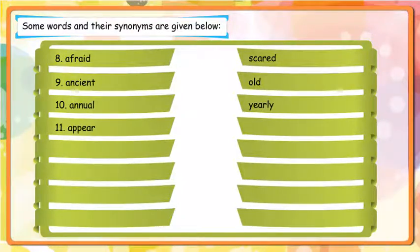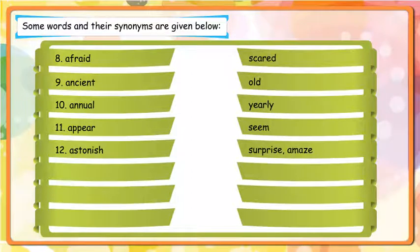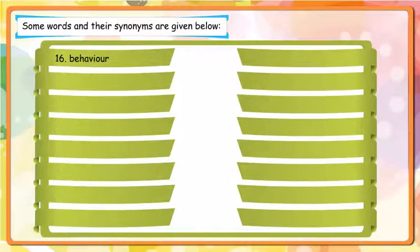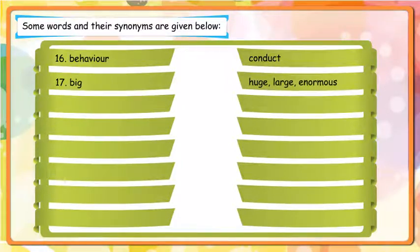Appear - Seem; Astonish - Surprise, Amaze; Attempt - Try; Awkward - Clumsy; Base - Mean, Ignoble; Behaviour - Conduct; Big - Huge, Large, Enormous; Blank - Empty.